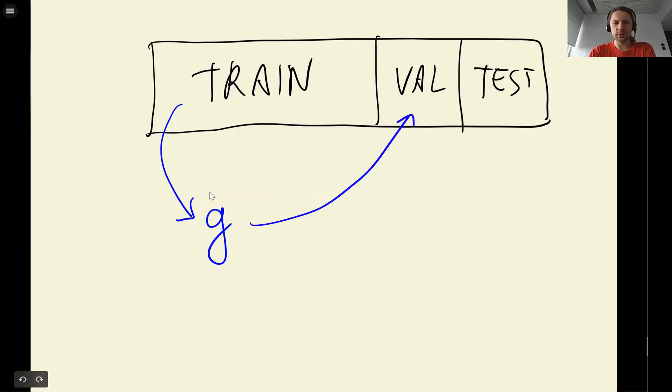Instead, what we should do is apply this to validation data and then look at the root mean squared error on validation data.